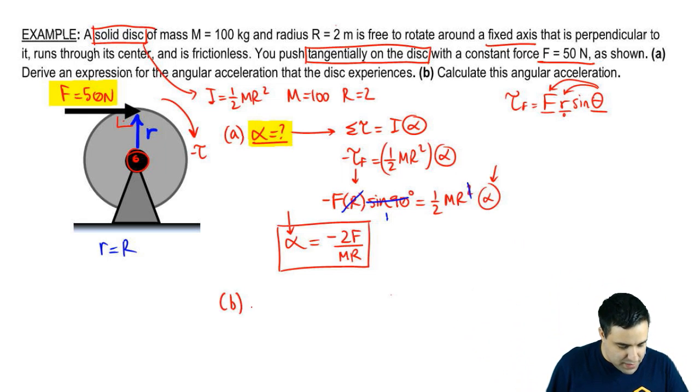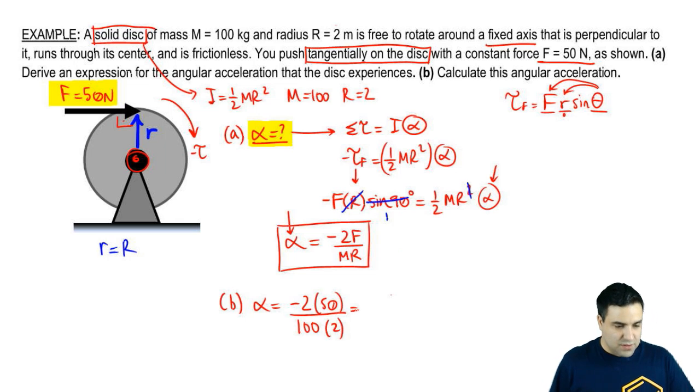For part B, all we're doing is plug in the numbers. So that's easy. Negative 2F. The force is 50. The mass is 100. And the radius is 2. So this is going to be negative 0.5 radians per second squared.